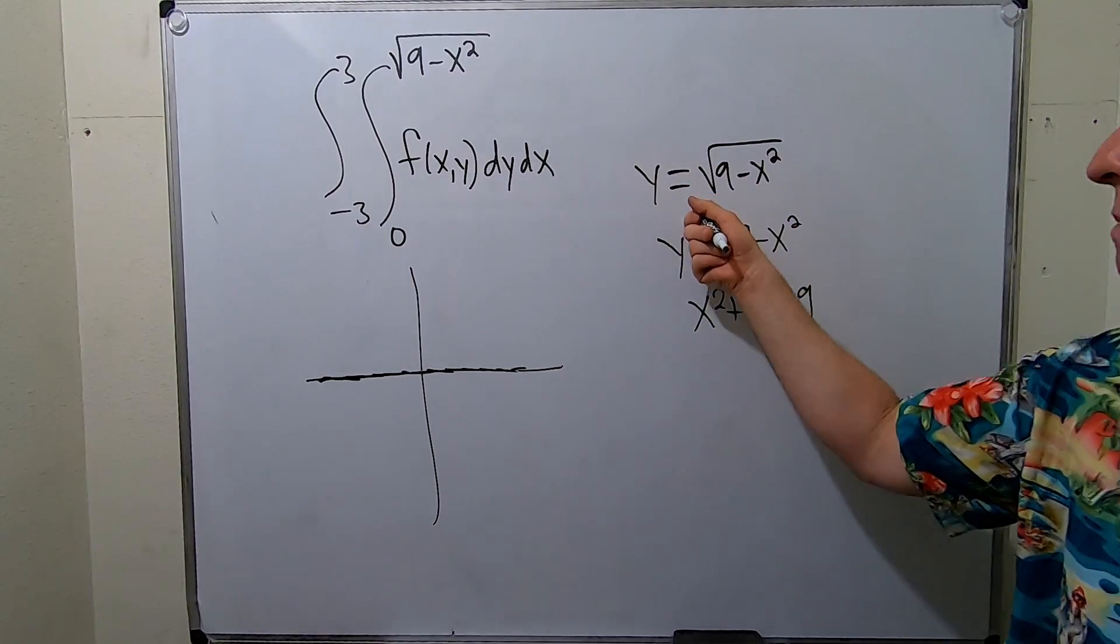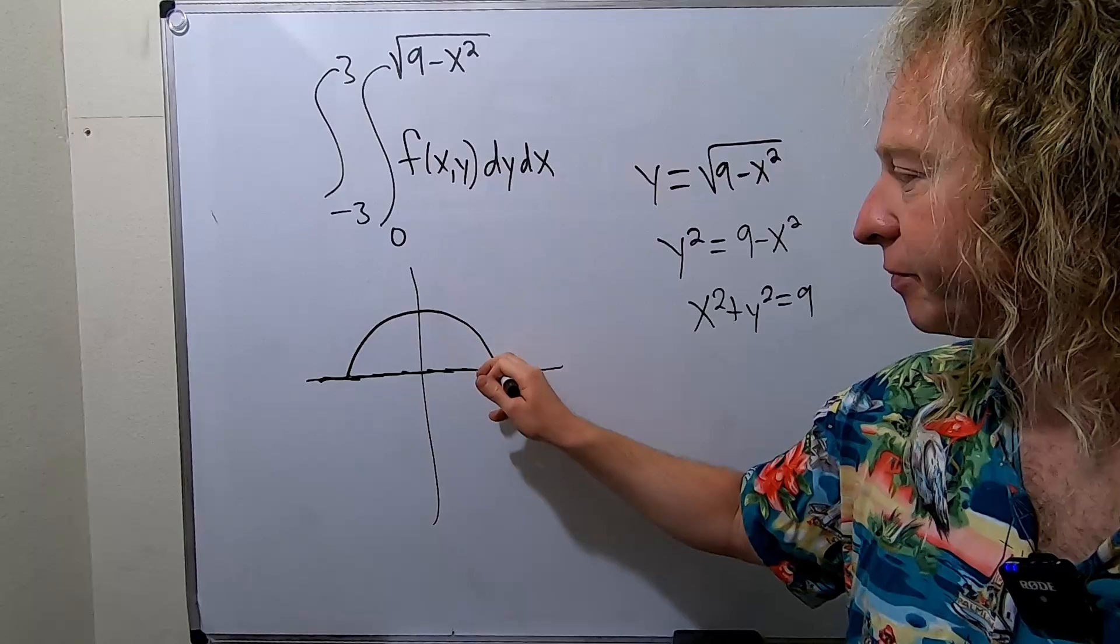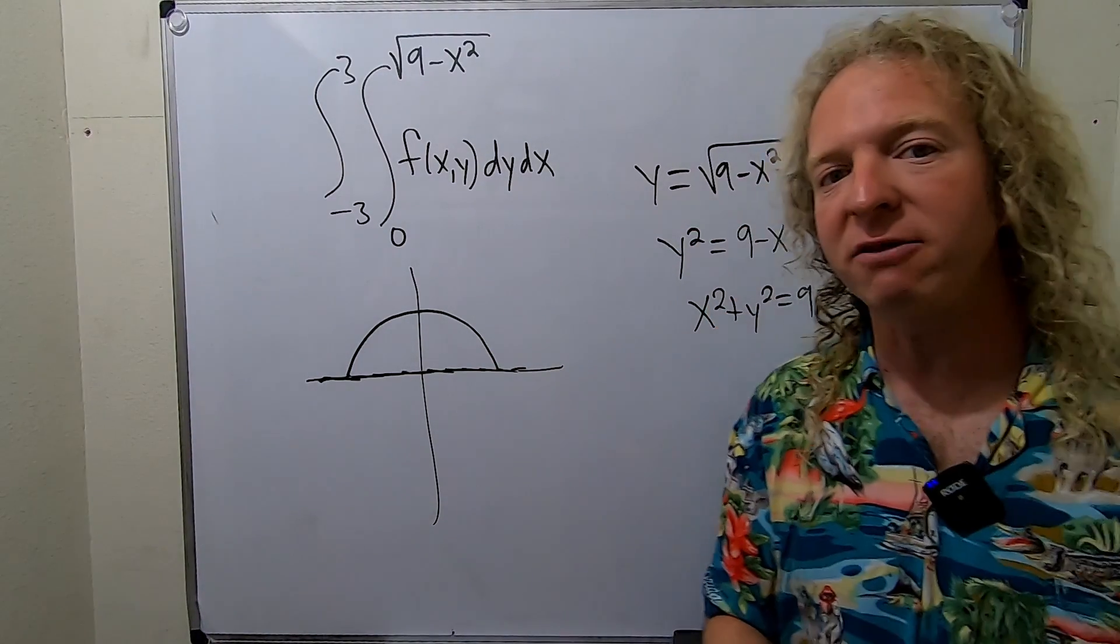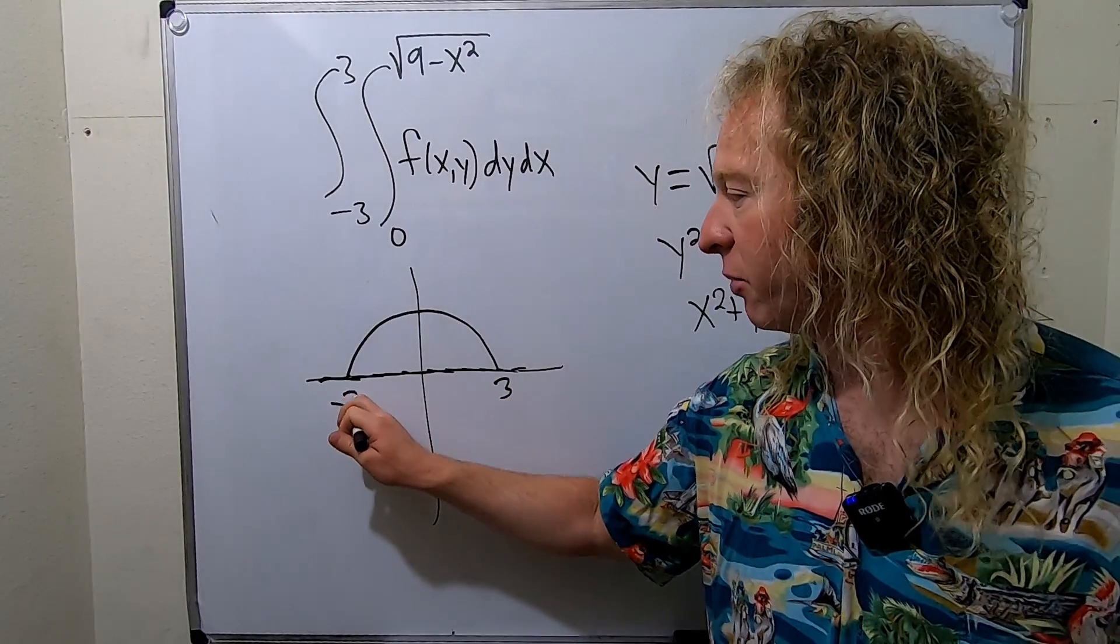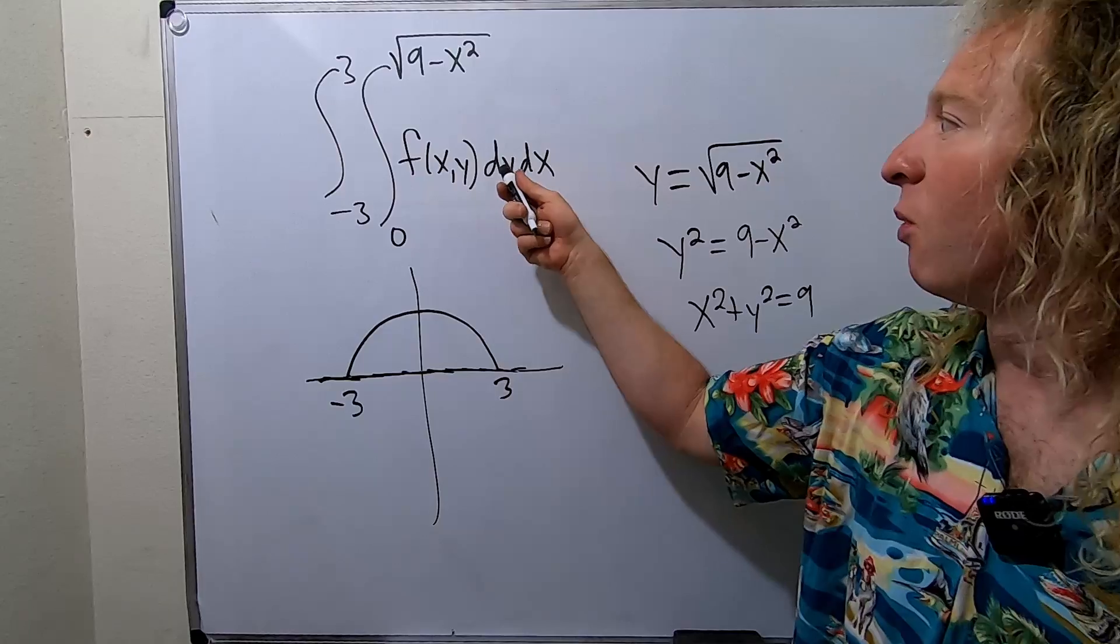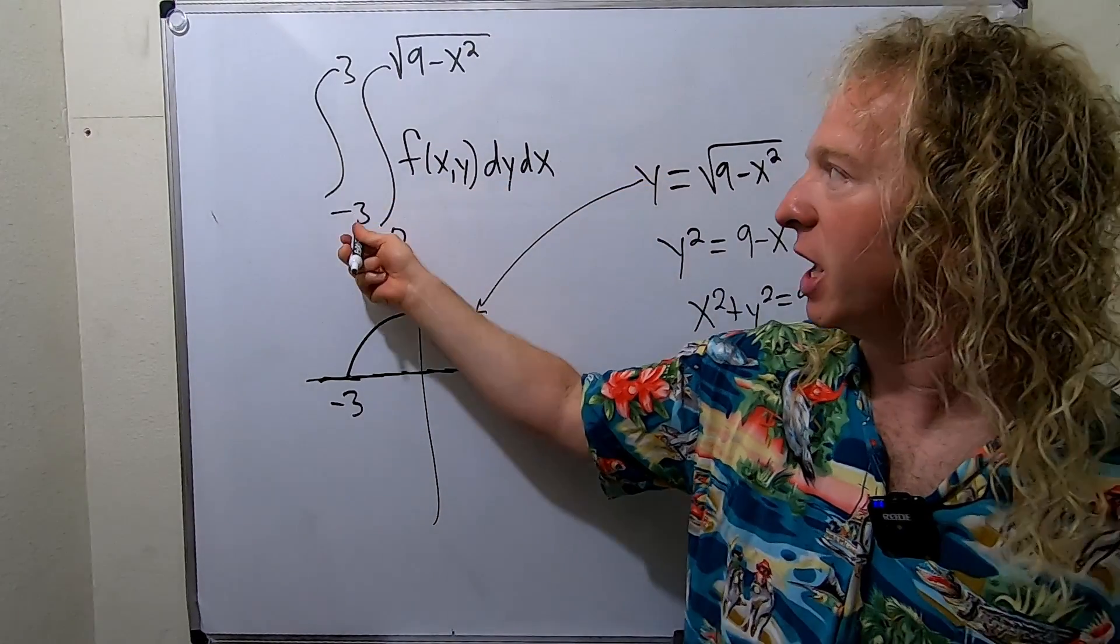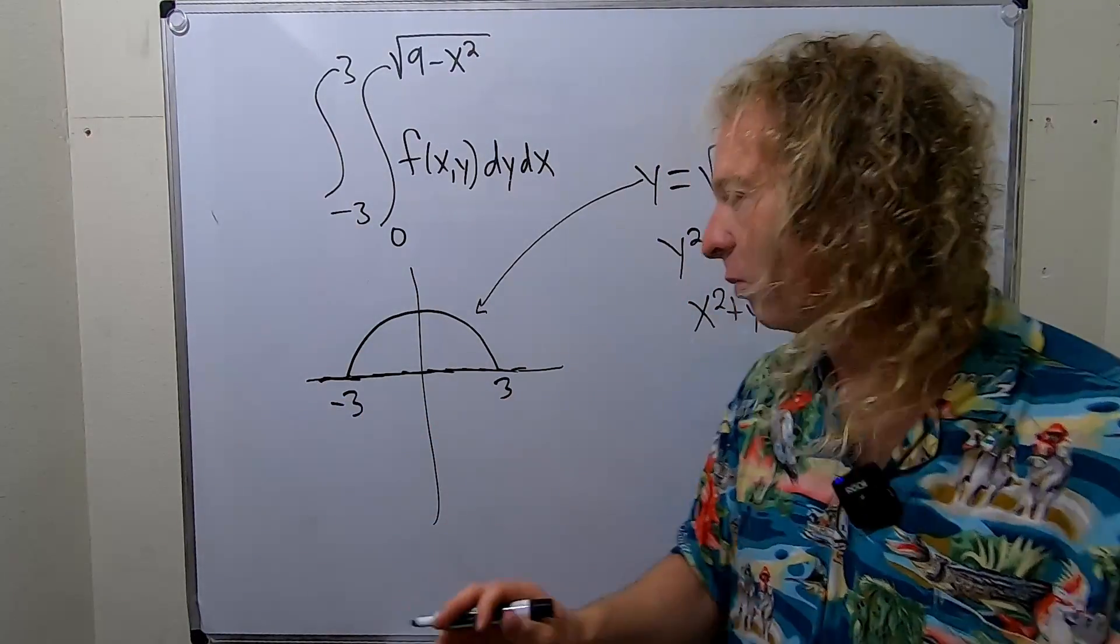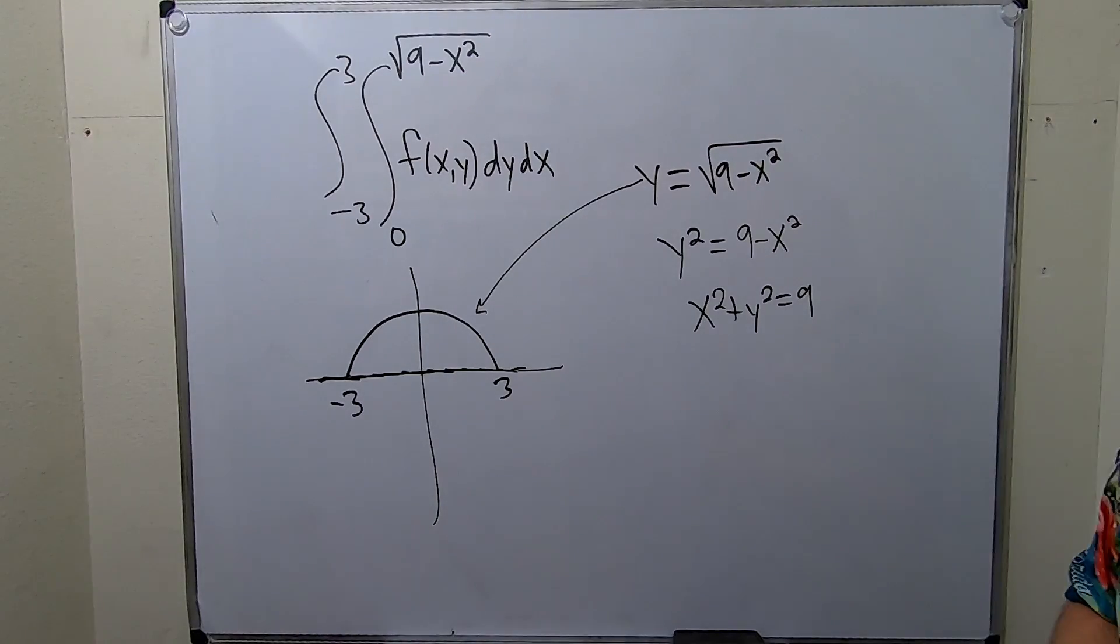This is a circle of radius 3 centered at the origin. So this equation gives you the top half of the circle. Notice if you plug in 3 and if you plug in negative 3 you get 0. So you'll have a 3 here and a negative 3 here. And notice it agrees with the other limits. Y goes from 0 to this function and x goes from negative 3 to 3. This is the region of integration.